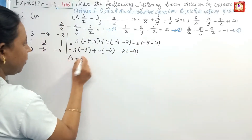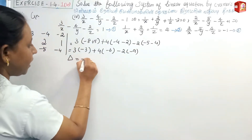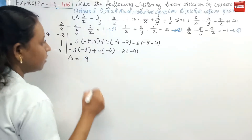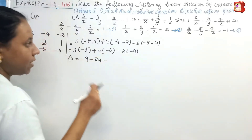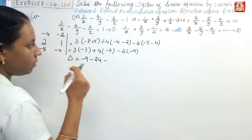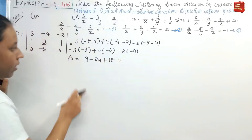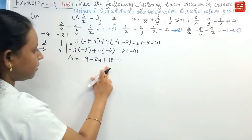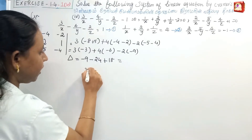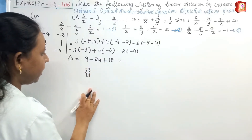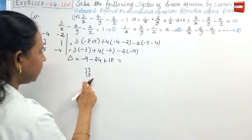So the determinant del equals −9 − 24 + 18 = −15.